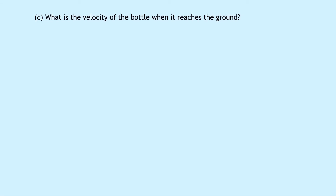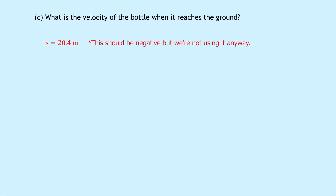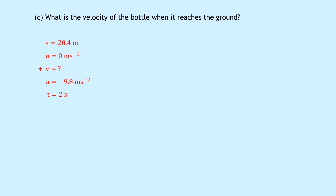Part C asks what is the velocity of the bottle when it reaches the ground? We consider the motion starting from its highest point falling towards the ground. S equals 20.4 metres, U equals 0 metres per second at its highest point, we're trying to find V, A equals minus 9.8 metres per second squared, and T equals 2 seconds — the time to fall equals the time to rise. Using V equals U plus AT: V equals 0 plus minus 9.8 times 2, giving minus 19.6 metres per second.